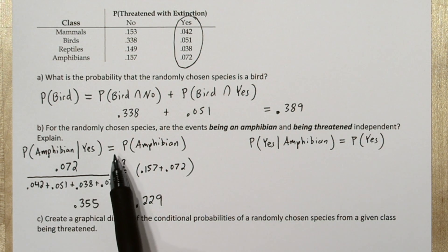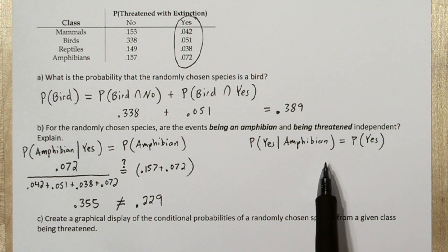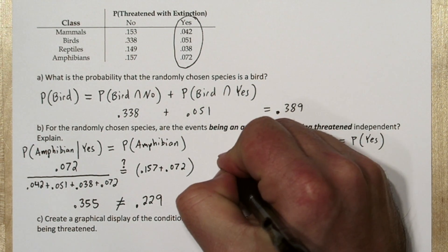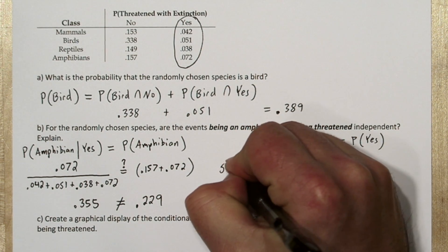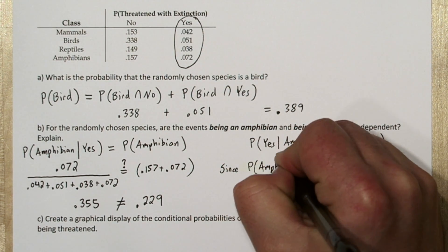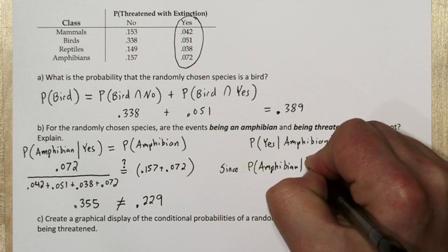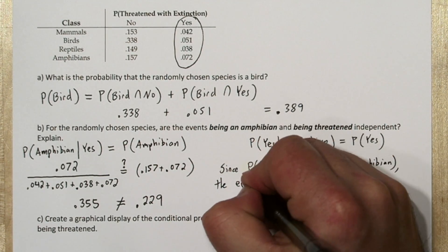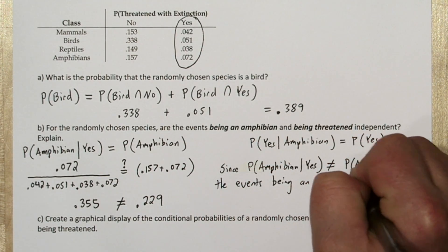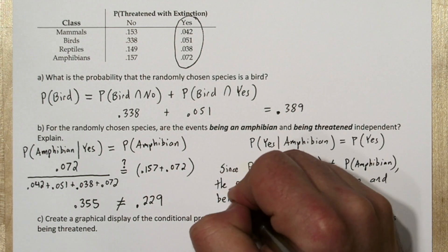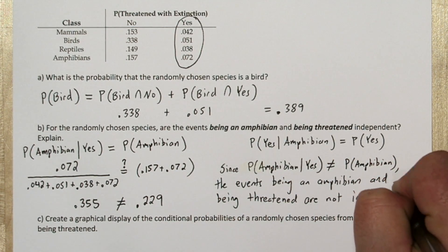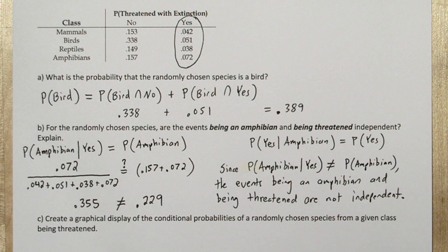Since this equation didn't hold true, we don't even need to bother checking the other one. We know that being an amphibian and being threatened are not independent. Since the probability of being an amphibian given you're threatened is not equal to the probability of being an amphibian, the events being an amphibian and being threatened are not independent — they are in fact dependent.